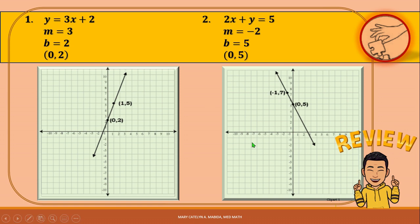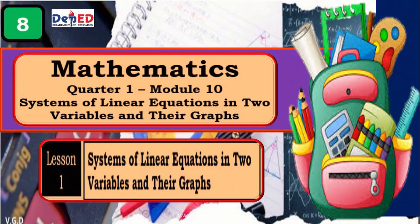Notice that the graphs suggest that the graph of a linear equation is a line. Now, what about the graph of a system of linear equations? How does a graph of a system of linear equations look like?